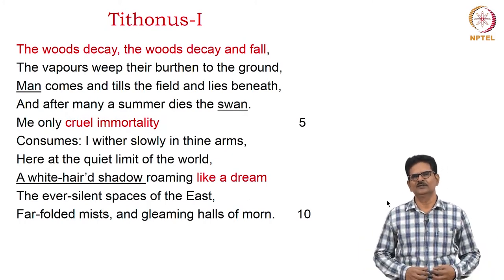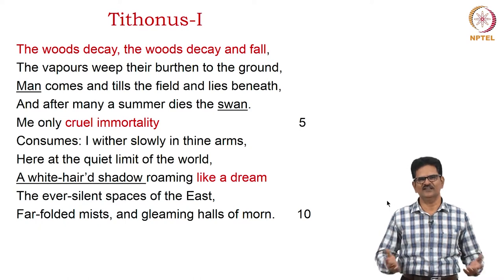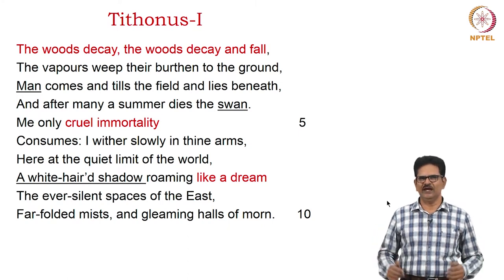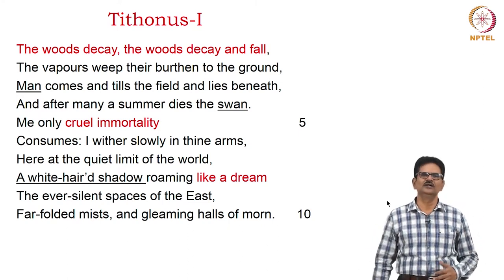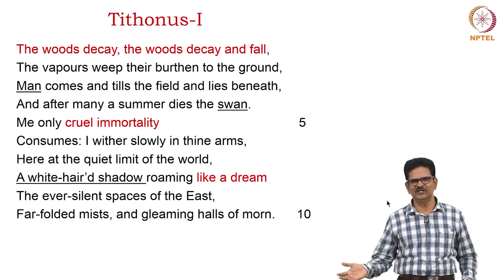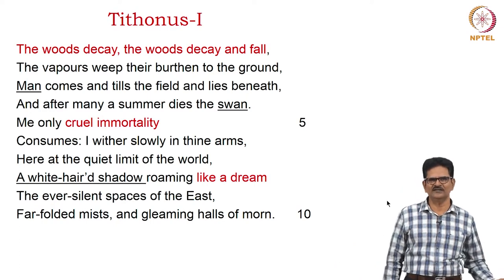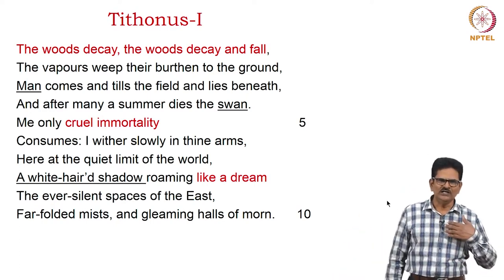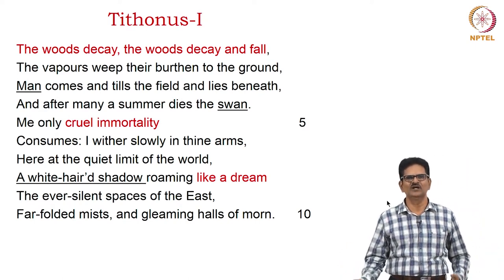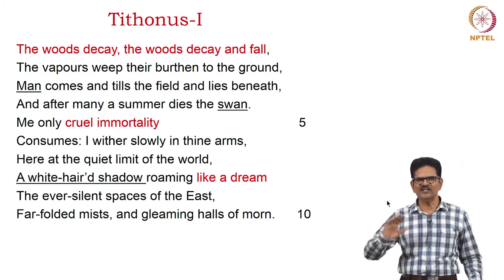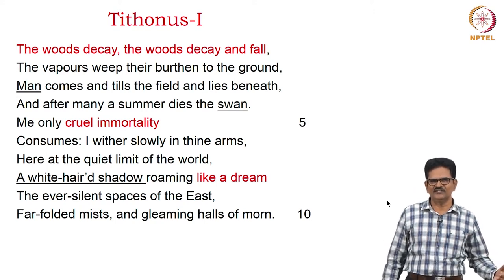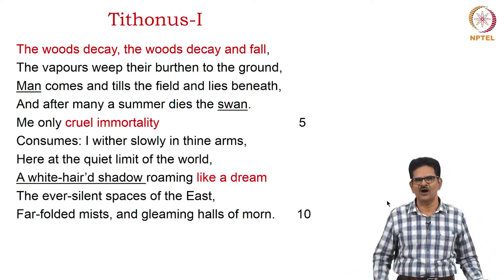We have put the poem in separate slides for convenience, but it is one long poem. The woods decay, the woods decay and fall, the vapours weep their burden to the ground. Man comes and tills the field and lies beneath, and after many a summer dies a swan. Me only cruel immortality consumes; I wither slowly in thine arms, here at the quiet limit of the world, a white-haired shadow roaming like a dream, the ever silent spaces of the East, far-folded mist, and gleaming halls of morn.